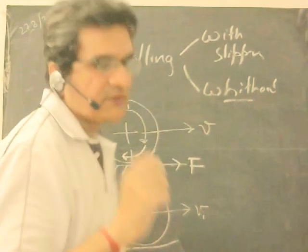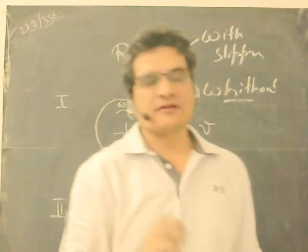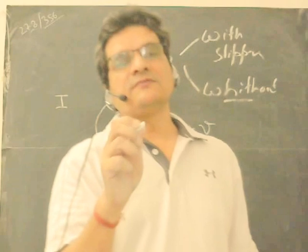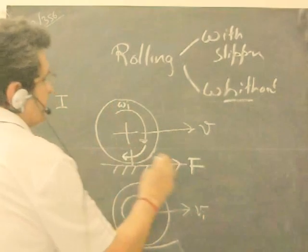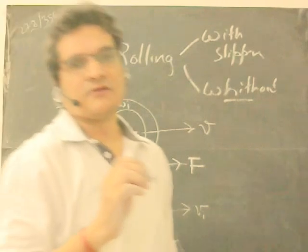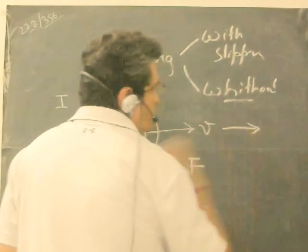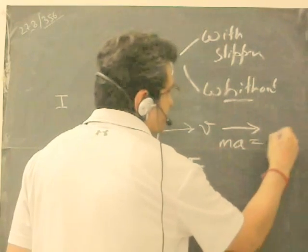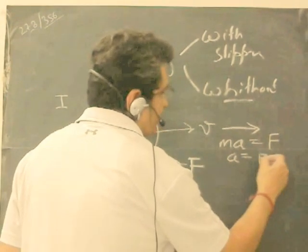Always keep in mind: when you are taking translational motion, that is the linear motion, all the forces acting on the body are to be taken as if they are acting on the center of mass. But when you take the rotational motion, take the torque at the point at which it is acting. So the friction force will act on the center of mass. Because of this force, the body will start moving in this direction and will have a certain acceleration, so mass times acceleration equals F.